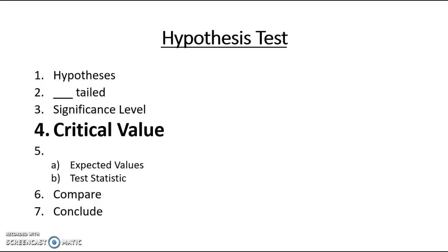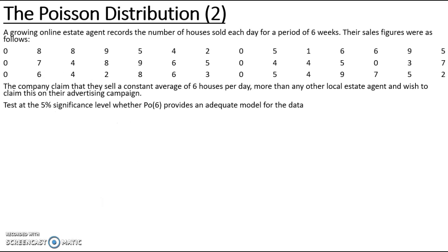The next step is to look at the critical value. Unlike previous questions, we do not have our data drawn in a frequency table. While we can work it out without a frequency table it does make our life much more difficult, so the first thing I am going to do is rearrange the data into a more manageable table.